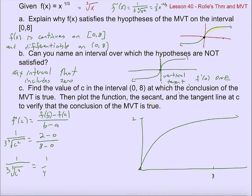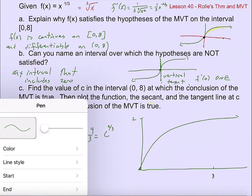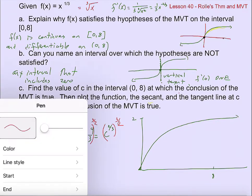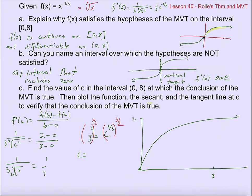I can solve this equation by getting c into the numerator. So 4 thirds equals c to the two-thirds. Then I raise both sides to the 3 halves power, and that gives me my solution for c: c equals 4 thirds to the 3 halves. You could simplify and rationalize if you want, but it doesn't seem all that worth it.